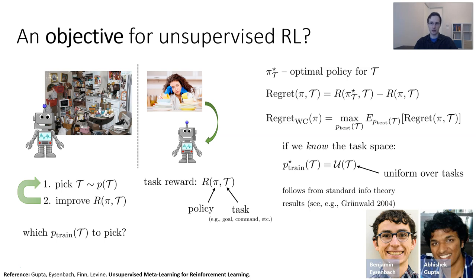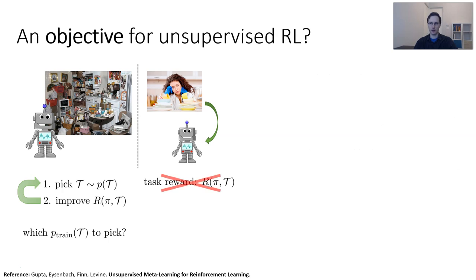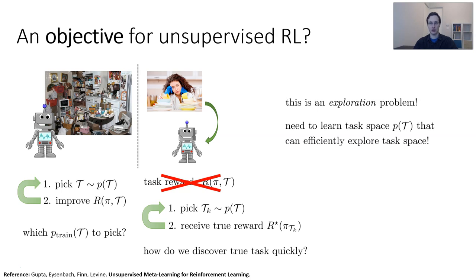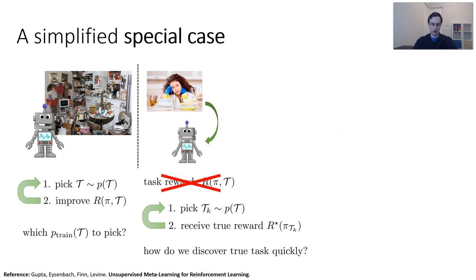As a warm-up, let's imagine the case where the user simply selects from a known distribution of tasks. We denote pi-star of t as the optimal policy for task t, and define a notion of regret: the regret of a policy on task t is the difference between the reward obtained by the optimal policy and the reward obtained by policy pi. We can define an objective for unsupervised RL as minimizing the worst-case regret — the regret in expectation under the worst possible testing distribution over tasks. If we know the task space but not their distribution, the optimal choice is to train on the uniform distribution over all possible tasks, which follows from standard information theory and game theory results. In reality, we don't know the task distribution, so we have to do something smarter: pick from among the trained tasks, attempt the task, receive the true reward, and refine what we think the task is. The real question is how to discover the true task quickly and efficiently — this is an exploration problem.